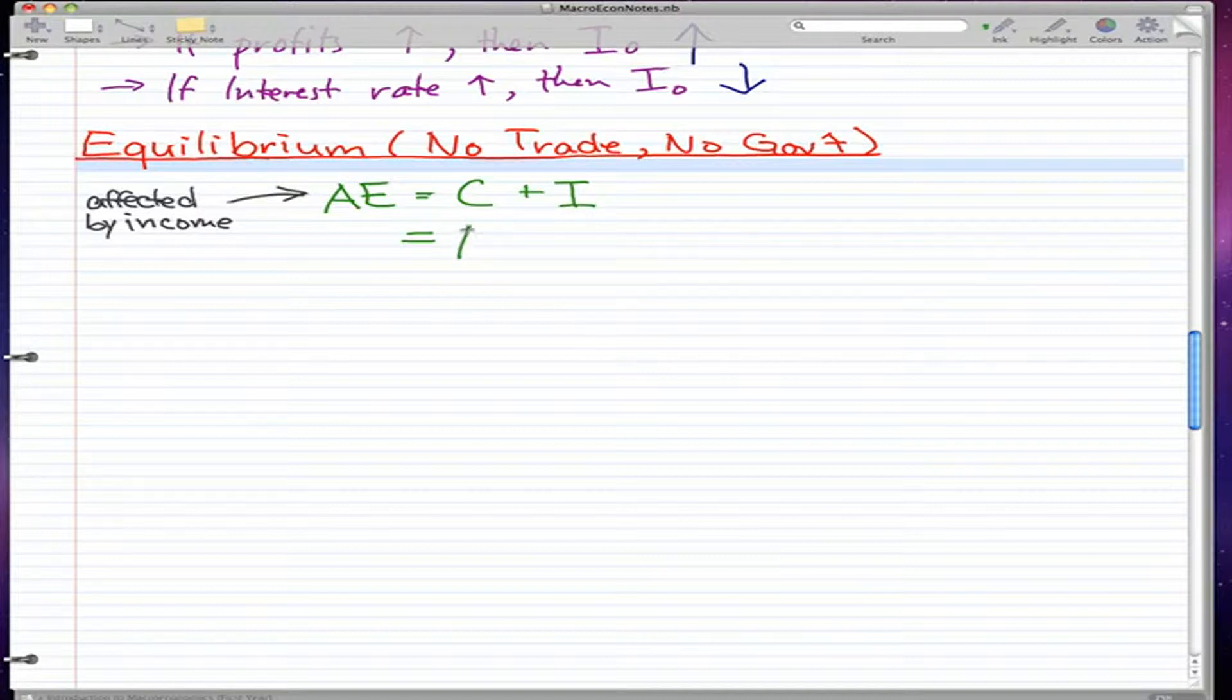And we also know that the formula for AE is also equal to autonomous expenditure plus fraction of income represented by Z and income represented by Y.